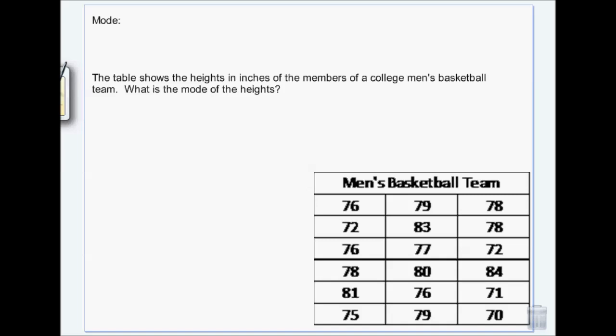The mode is the number or numbers that show up most in the list. You can have more than one number show up. Like if, for example, I have a five shows up three times and a three shows up three times and that's the most, then you have two modes. They have to tie at that point.